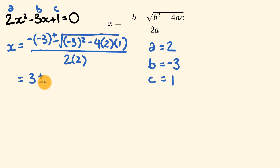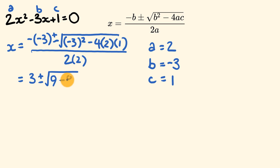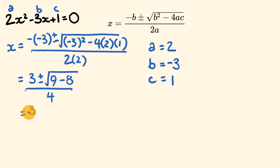This is plus or minus the square root. Negative 3 squared: negative 3 times negative 3 is equal to 9. From this we're going to subtract 4 times 2 times 1: 4 times 2 is 8, times 1 is also 8. And this all goes over 2 times 2, which is equal to 4. So we have 3 plus or minus — now 9 take away 8 gives us the square root of 1 — and all of this goes over 4.